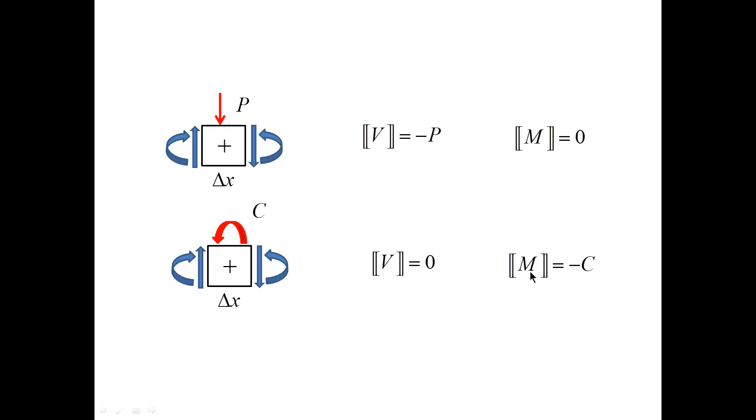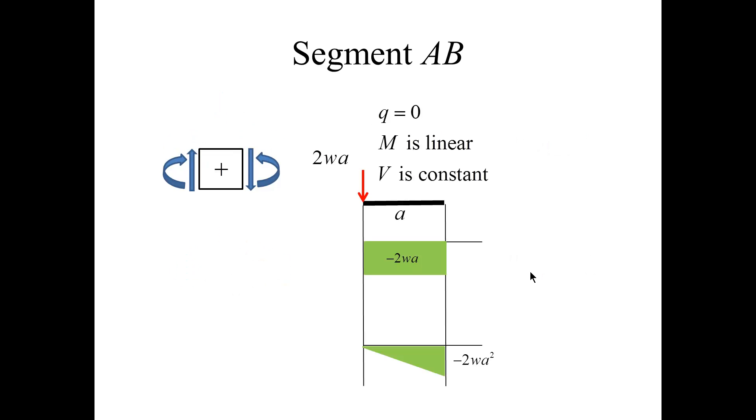Using these relationships, I will proceed with segment AB. I will start on the left, and I observe that according to my sign convention, there is a negative shear force. The magnitude of this force is 2Wa, and this segment is unloaded.